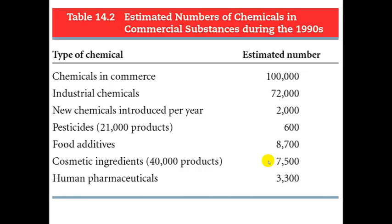To give a sense of the large number of chemicals: during the 1990s there were an estimated 100,000 chemicals in commercial substances, with about 72,000 of them being industrial chemicals used for manufacturing. About 2,000 were introduced per year in the 90s. There were 600 pesticides — with about 21,000 different types produced overall — plus food additives like food coloring and preservatives, cosmetic ingredients, and a huge number of human pharmaceuticals.